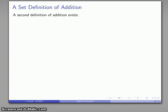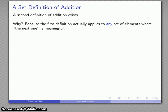And so this leads us to a second definition of addition, and you might ask well why do you need a second one? Don't you already have one? And the reason is that the Peano postulates, as good as they are, actually apply to any set where we can identify what the next one is.